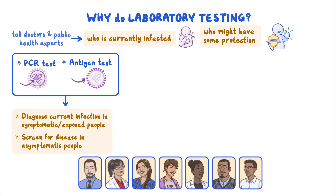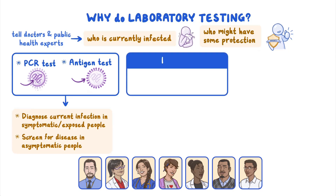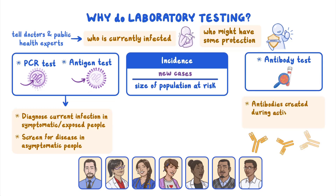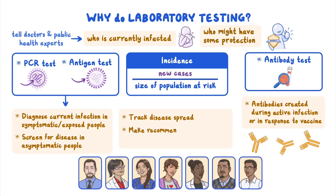Public health experts can use diagnostic and screening results to calculate incidence, which refers to the number of new cases of a disease in a population over a specific time period, calculated by dividing the number of new cases by the size of the population at risk. Antibody tests look for antibodies produced by the immune system to fight a disease, and antibodies can be created during an active infection or in response to vaccination. Public health experts use laboratory test results to track disease spread and make science-based decisions and recommendations to reduce the spread of disease and protect communities.